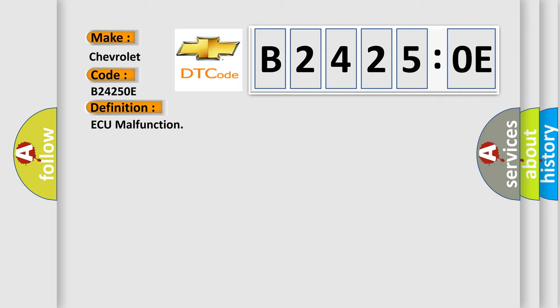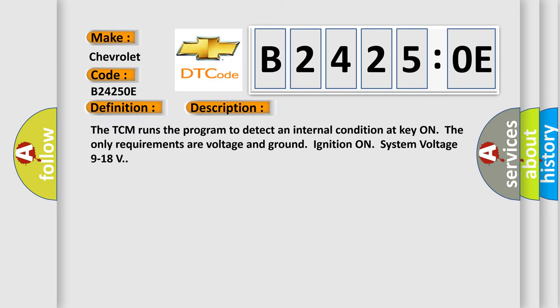And now this is a short description of this DTC code. The TCM runs the program to detect an internal condition at key on. The only requirements are voltage and ground ignition on, system voltage 9 to 18 volts.